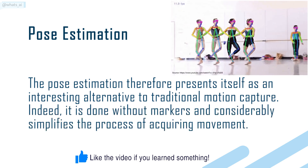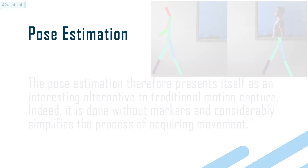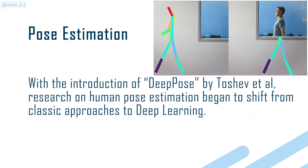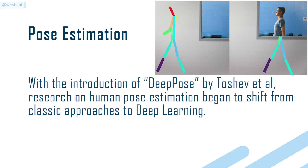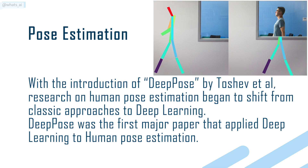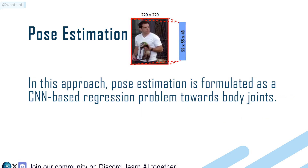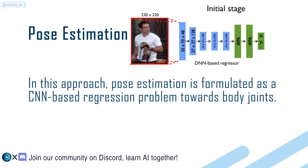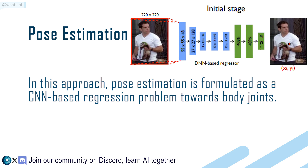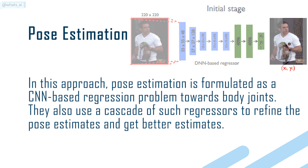Indeed, pose estimation is done without markers and considerably simplifies the process of acquiring movement. With the introduction of DeepPose by Toshev et al., research on human pose estimation began to shift from classic approaches to deep learning. DeepPose was the first major paper that applied deep learning to human pose estimation. In this approach, pose estimation is formulated as a CNN-based regression problem towards body joints, and they also use a cascade of such regressors to refine the pose estimates and get better results.